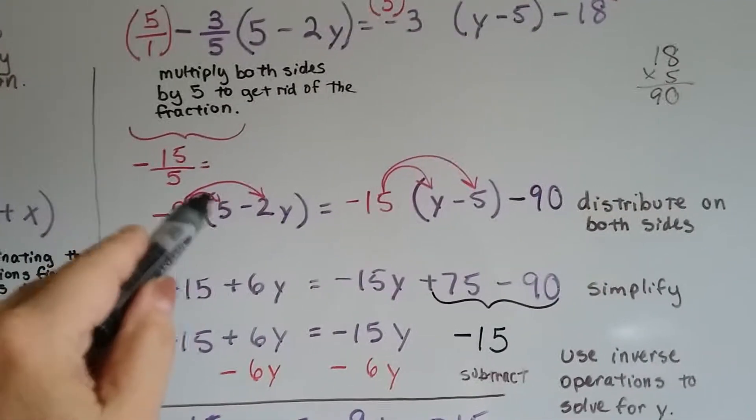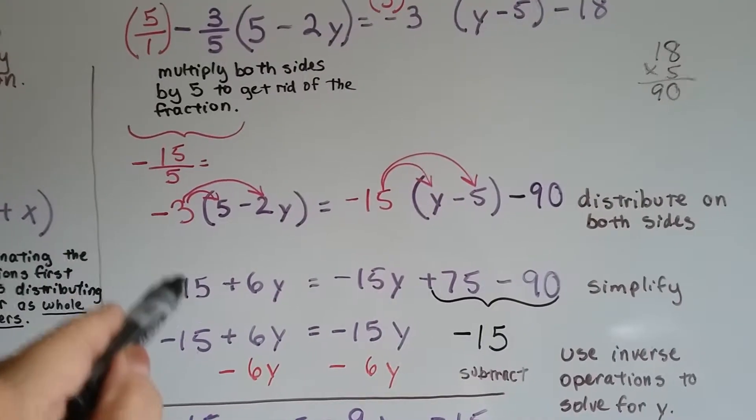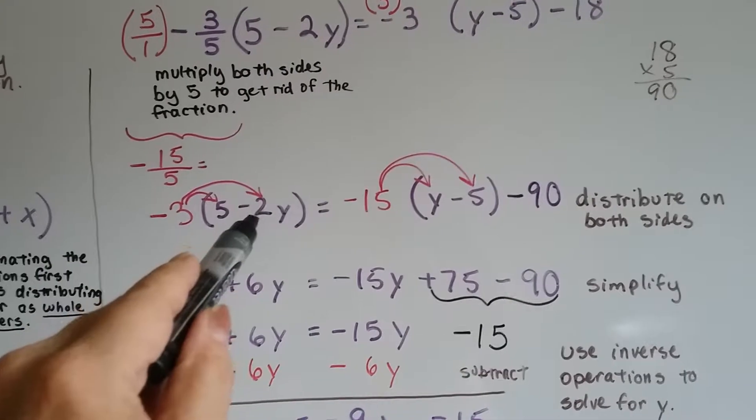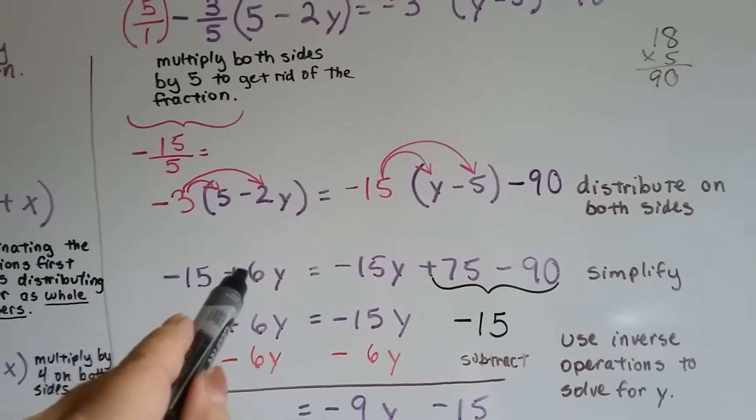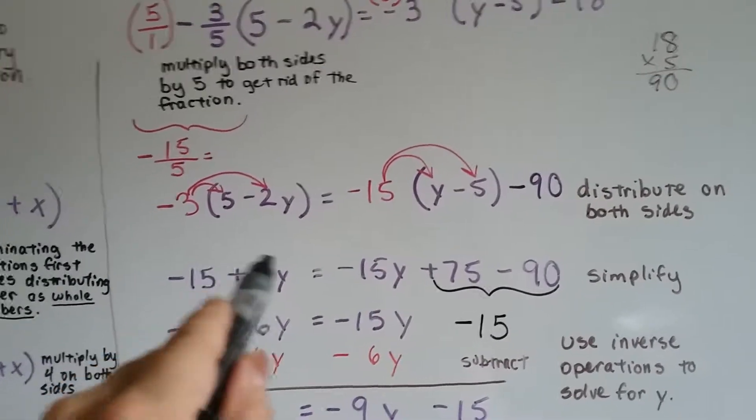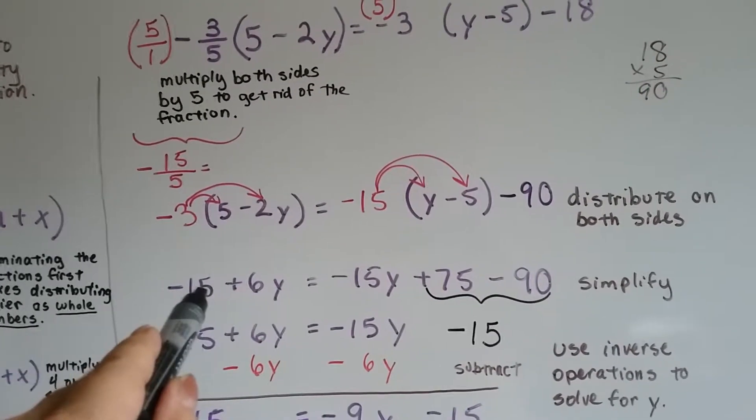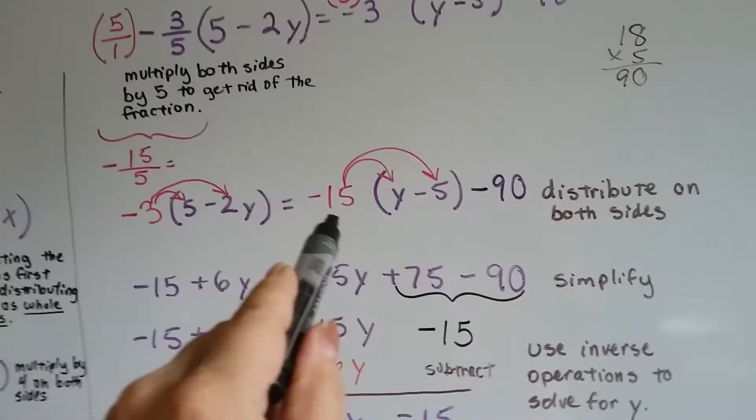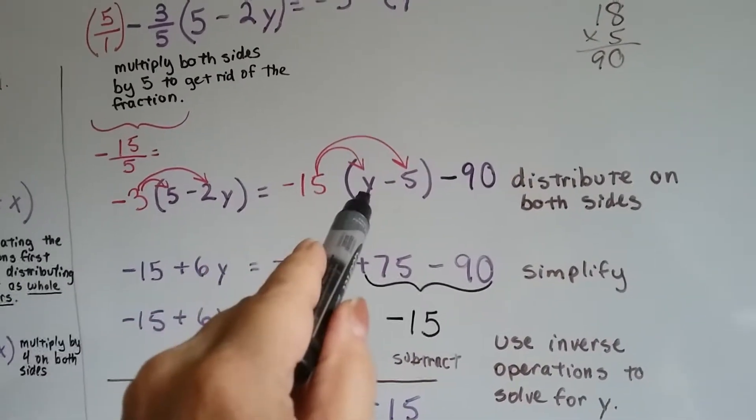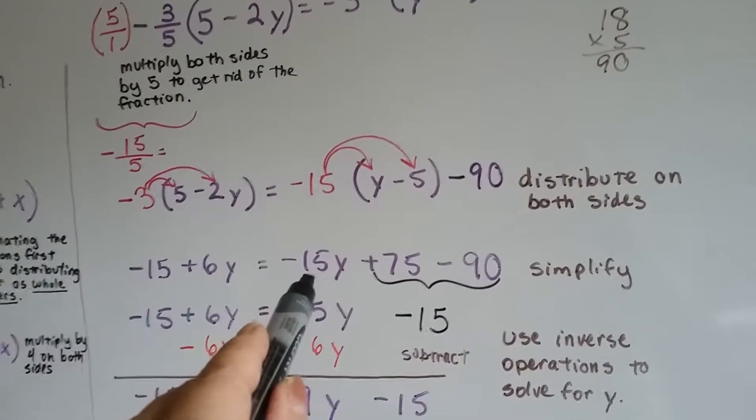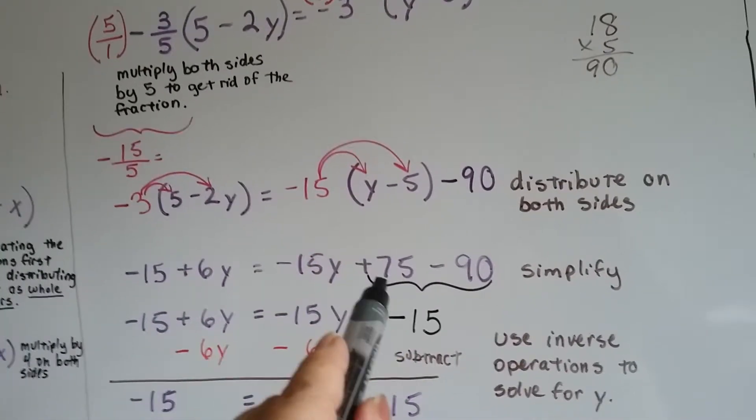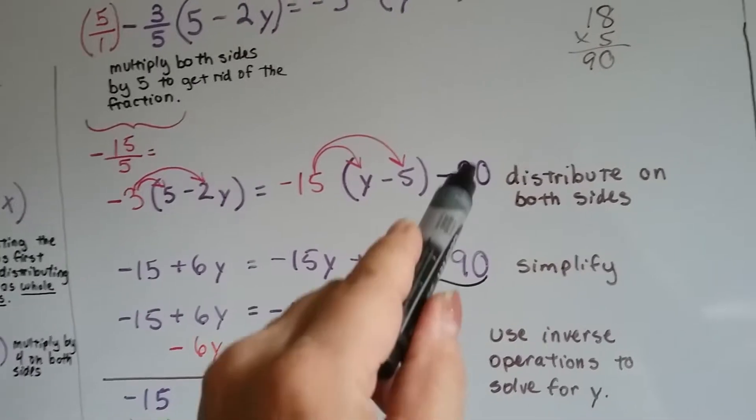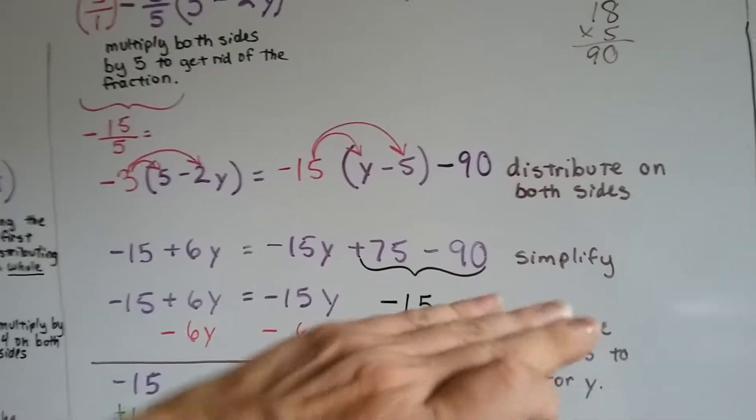We're going to do the distributive property for these two parts right here. Negative 3 times 5 is negative 15. Negative 3 times negative 2y is positive 6y. We have two negatives that make a positive. Now that's the left side of the equation. We've got negative 15 times a positive y. That gives us negative 15y. Negative 15 times negative 5 gives us positive 75, and we drop down that negative 90.